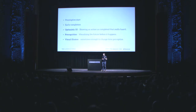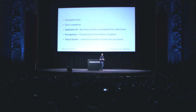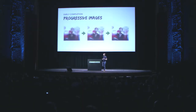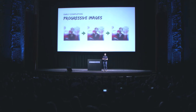There are three more patterns I'd like to cover: optimistic UI, precognition, and visual illusion. For early completion, a simple example is progressive images — we're showing you something before the image has fully loaded. Here's an example from AMP: a page in AMP is completely statically laid out, and AMP always knows how big any element on the page will be before it loads external assets, so we can display the layout before anything else has loaded, raising the perceived speed of the site.